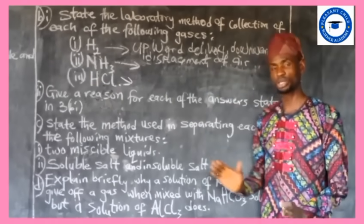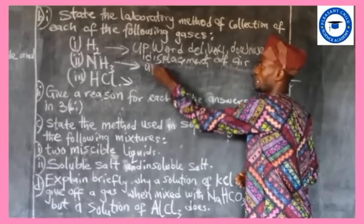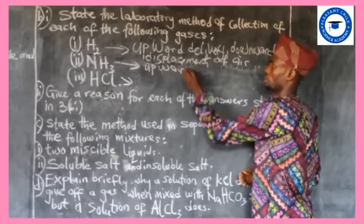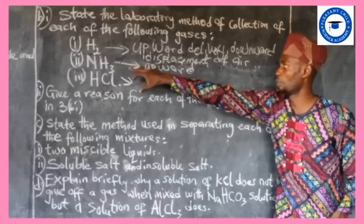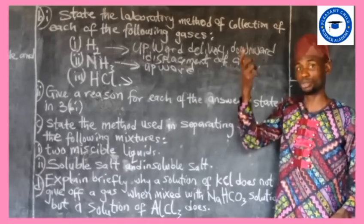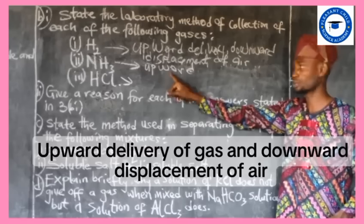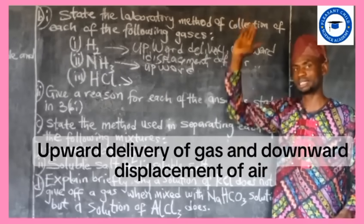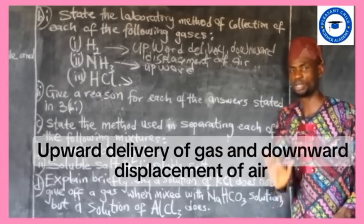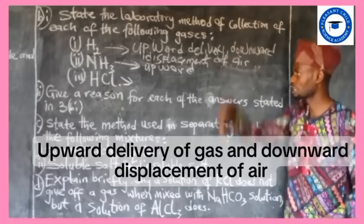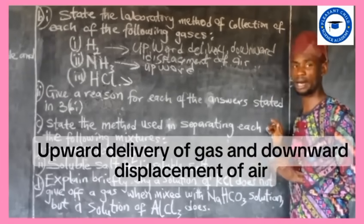For ammonia gas, the collection method is also upward delivery of gas, downward displacement of air — the same as hydrogen gas. Since both ammonia and hydrogen have the same method of collection, we write the same thing: upward delivery of gas, downward displacement of air.